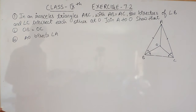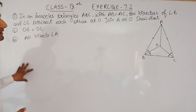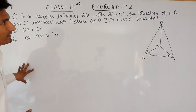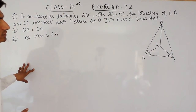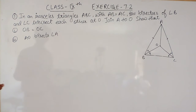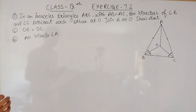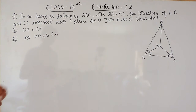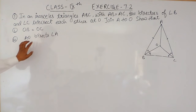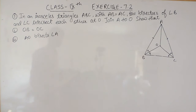The question says: in an isosceles triangle ABC, when AB is equal to AC, the bisector of angle B and angle C intersect each other at O. Join AO and you have to show that OB is equal to OC, and you have to prove that AO bisects angle A.